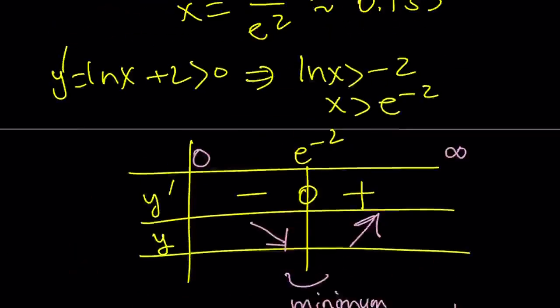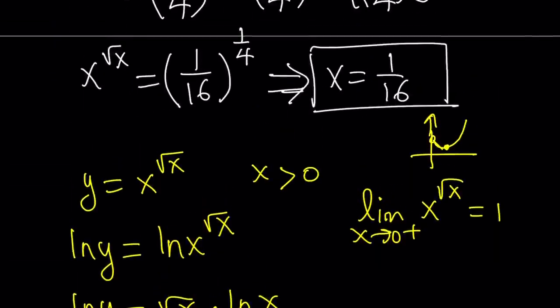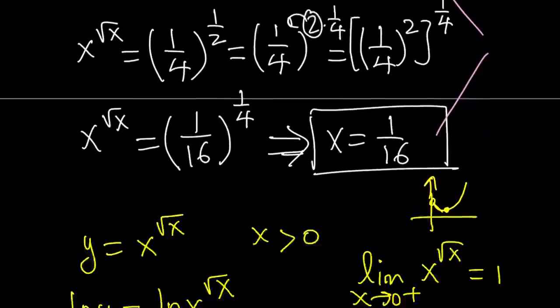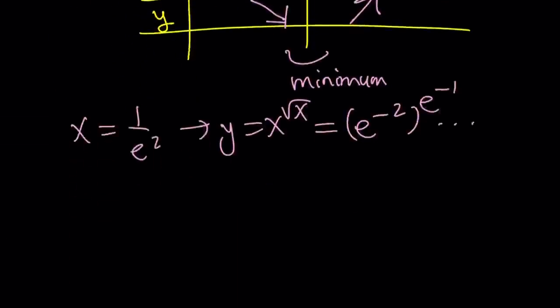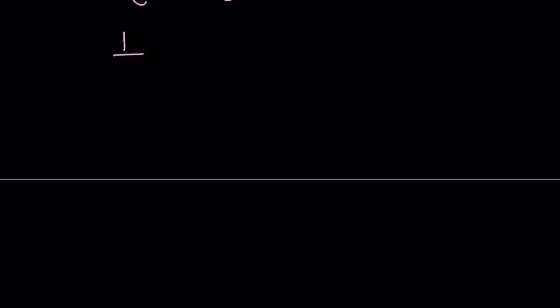We found two solutions, right? To this equation, we found, okay, 1 fourth is a solution, and 1 sixteenth is another solution. I want you to notice another thing, that 1 over e squared is actually between these values.